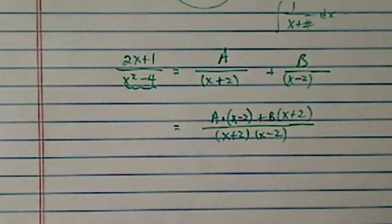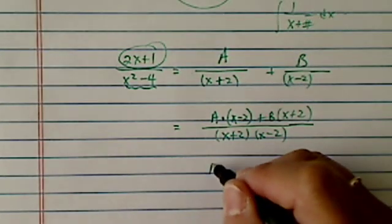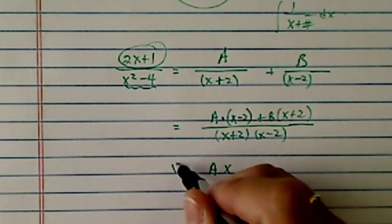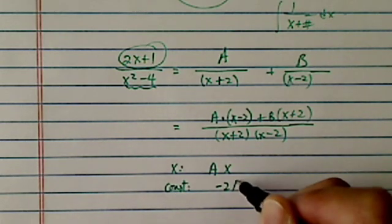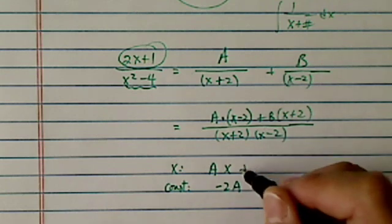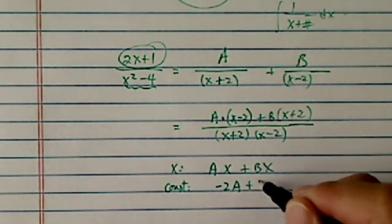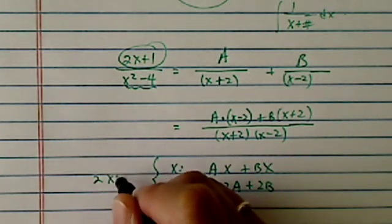And then we're just going to compare coefficients with the 2x plus 1. So let's try that. We have Ax, that's the x term. And then constant term, I have minus 2A over here, that's the first one, plus Bx, that's this part, and then plus 2B. Now x term over here, I have 2x plus 1.